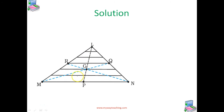The center of mass of the triangle as a whole therefore lies on the median L P. Similarly, we can argue that it lies on the median M Q and N R. M Q and N R medians also coincide at the same point G. This means the center of mass lies on the point of concurrence of the medians — the centroid G of the triangle.